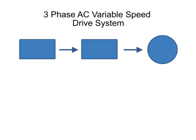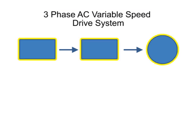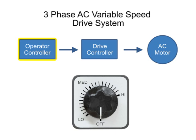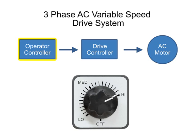This block diagram illustration depicts a typical three-phase AC variable speed drive system. It has three main components: an operator control, a drive controller, and an AC motor. An operator control device provides a means to start and stop the motor and adjust the operating speed.